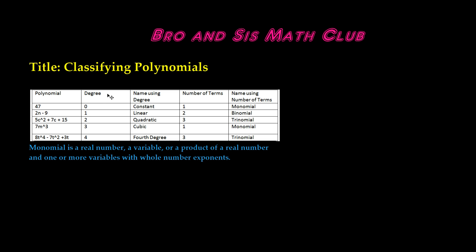Here we have degree. The degree of a polynomial in one variable is the same as the degree of the monomial with the greatest exponent. So you're just trying to find the value of the greatest exponent.